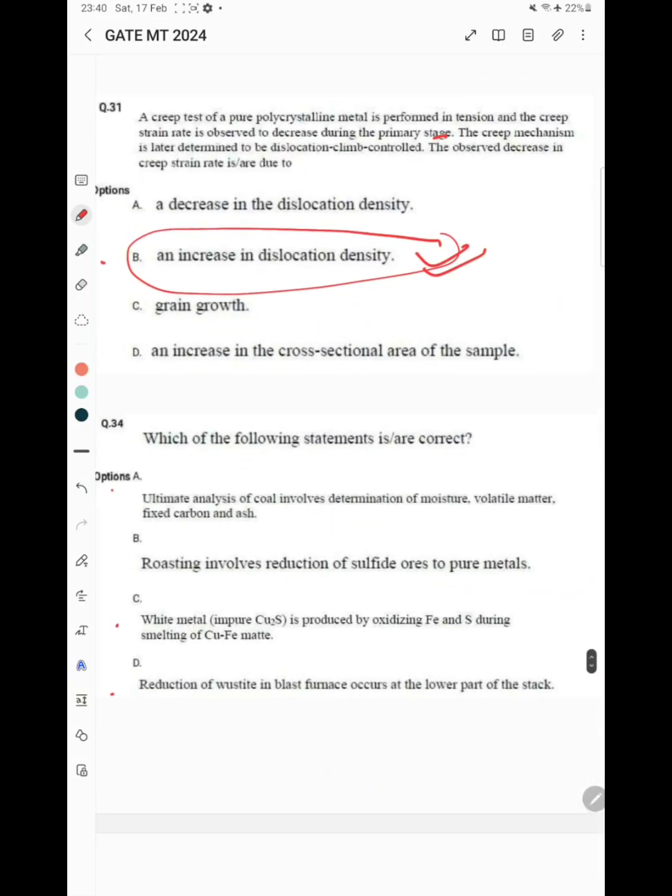Which of the following statements is correct? Ultimate analysis of coal involves determination of moisture, volatile matter, fixed carbon and ash - this is correct. Roasting involves reduction of sulfide ore to pure metal - this is false. White metal is produced by oxidizing iron and sulfur during smelting of copper-iron matte - this is true. Reduction of wuestite in blast furnace occurs at the lower part of the stack - this is true. So options A, C, and D are correct.